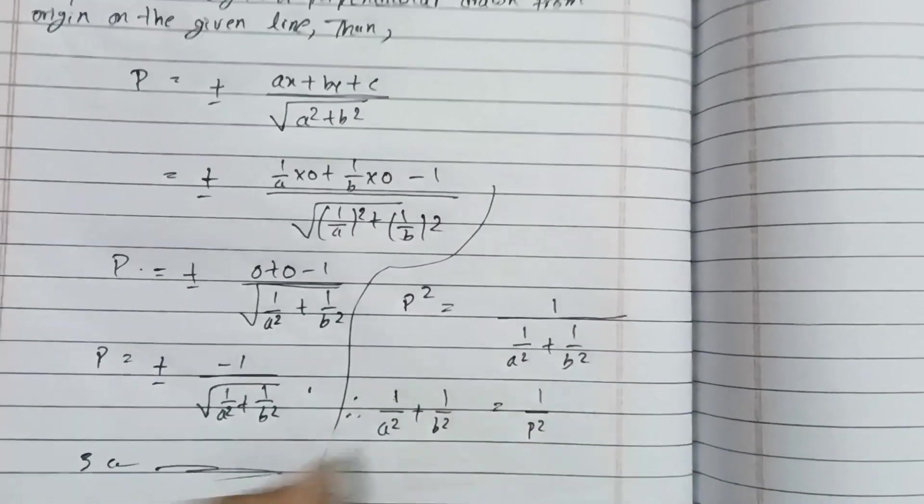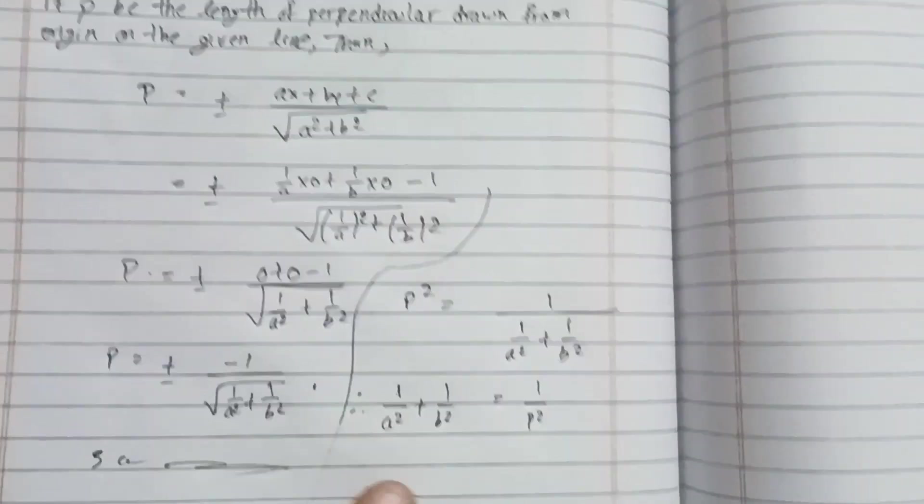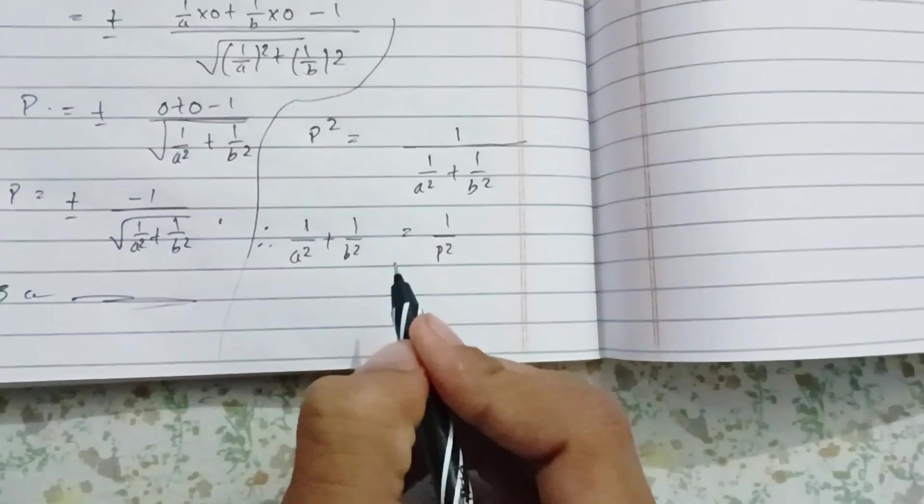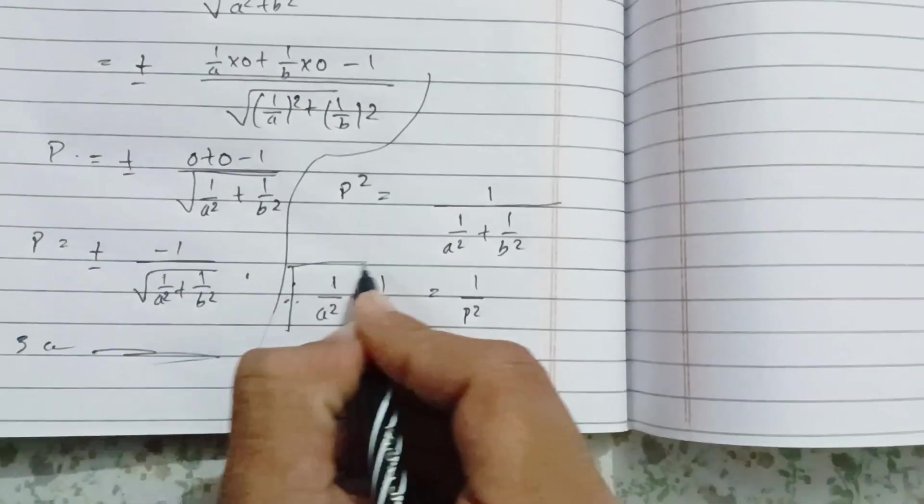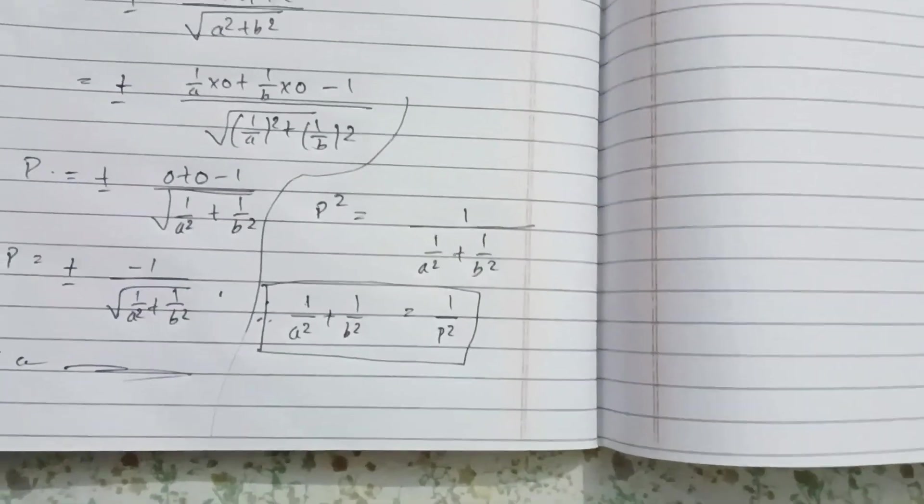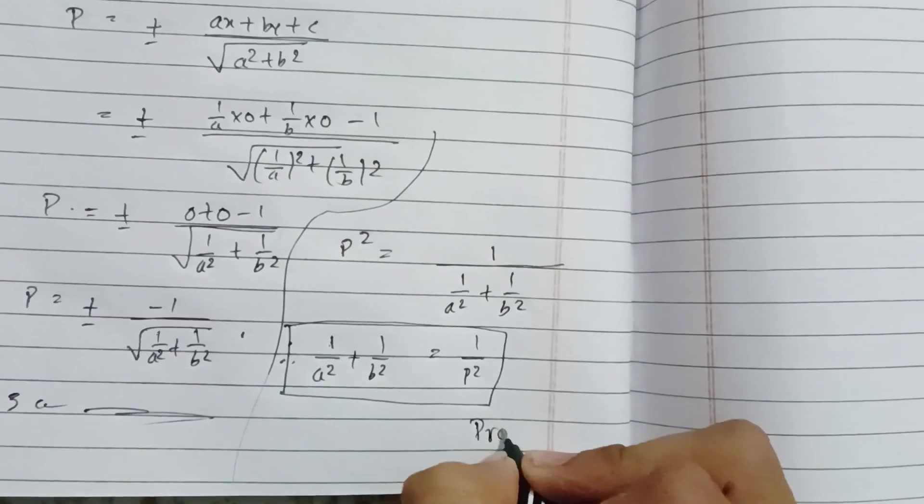Therefore, one by p square equals one by a square plus one by b square. Hence proved.